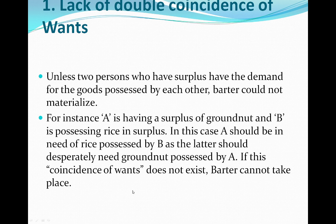That is the double coincidence of want. Unless two parties have a surplus and demand the goods possessed by each other, barter could not occur. For example: A has groundnuts, B has rice. Suppose A needs rice and B needs groundnuts — that is a barter system. But if B needs a table instead, that is not a barter system. You would have to find two matching parties.